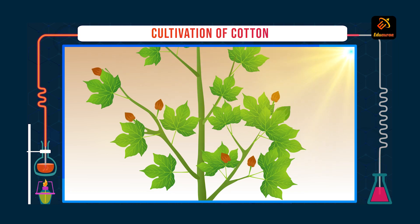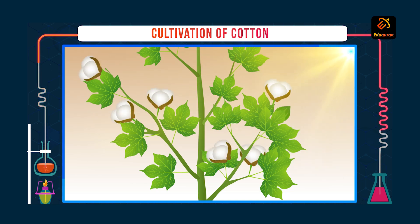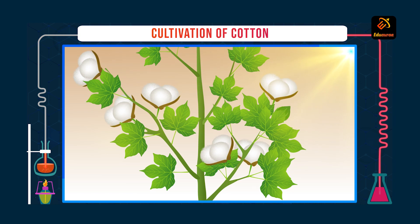Cotton grows in these seeds after some time. Green cotton balls turn brown, and at maturity the cotton balls burst, and the white cotton fibers come out from those cotton balls.